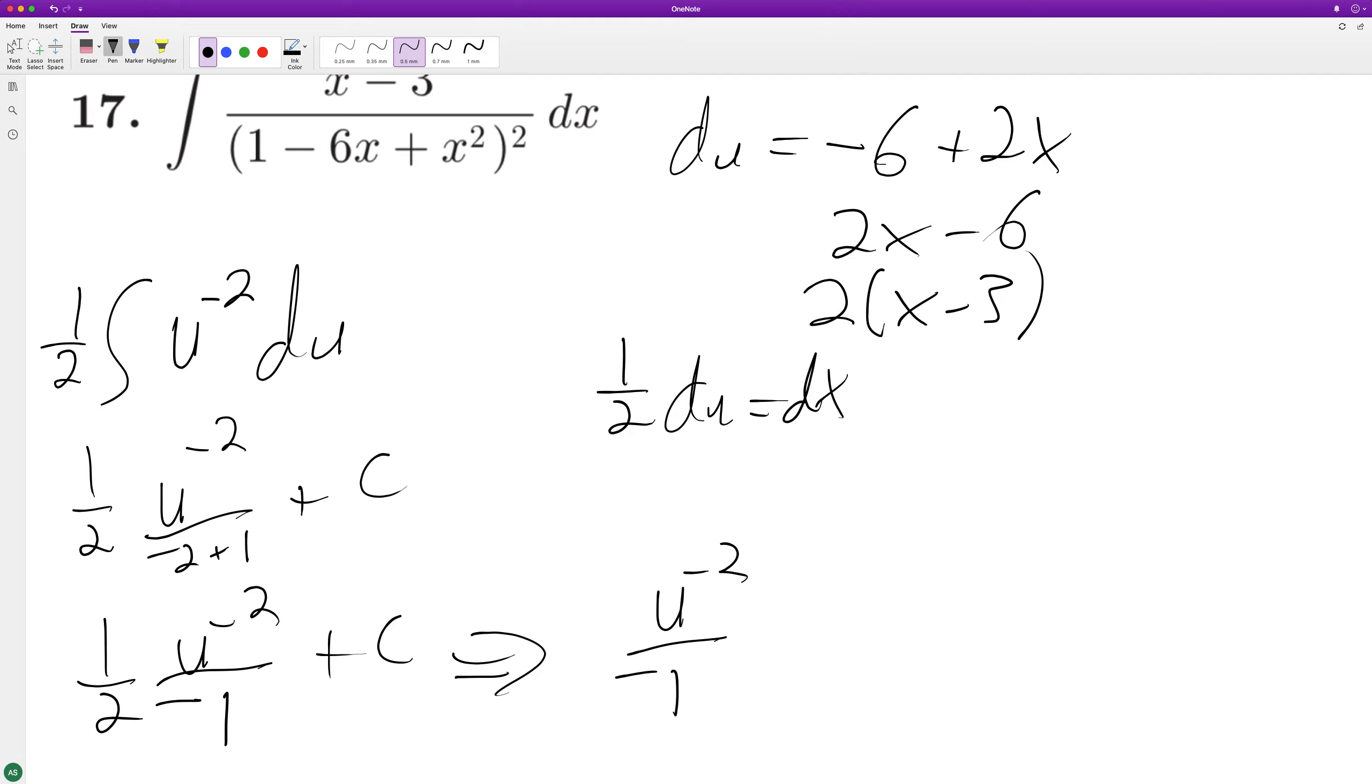So we get u raised to negative 2 over negative 1. Let's see here, plus c. So finally negative 1 over, sub back in for u, 1 minus 6x. This should be minus 1, negative 1.